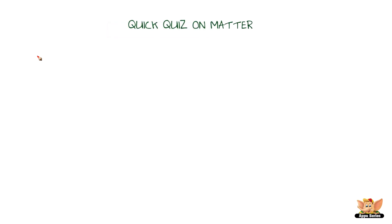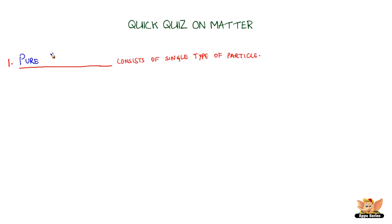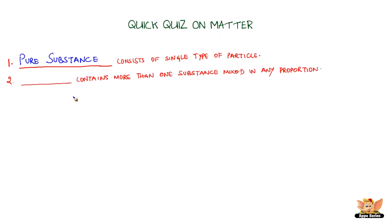Quick quiz on matter. A pure substance consists of a single type of particles. A mixture contains more than one substance mixed in any proportion.